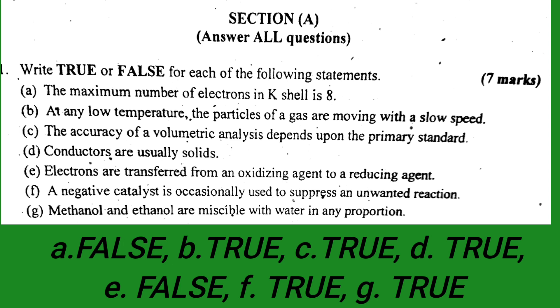Number D: conductors are usually solids. Conductors are usually solids - this is true. Number E: electrons are transferred from an oxidizing agent to a reducing agent. This is false. Electrons are transferred from the reducing agent to the oxidizing agent, not the other way around.